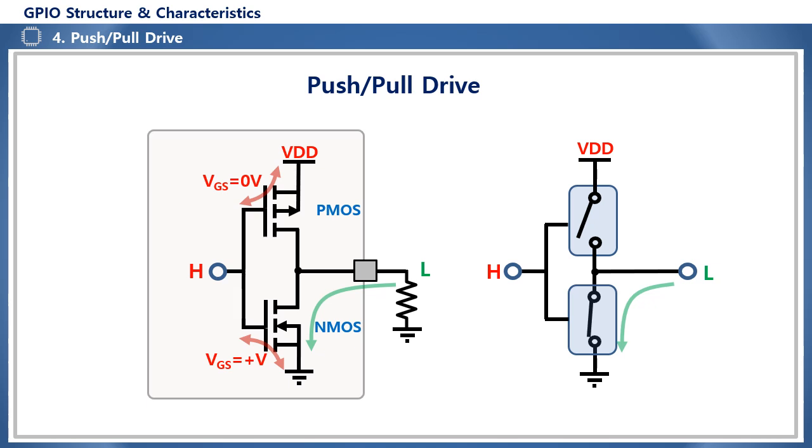A circuit that consists of a P-type MOSFET and an N-type MOSFET in a series structure is called CMOS, or Complementary Metal Oxide Semiconductor. Most MCUs and digital ICs use GPIOs that utilize this CMOS.